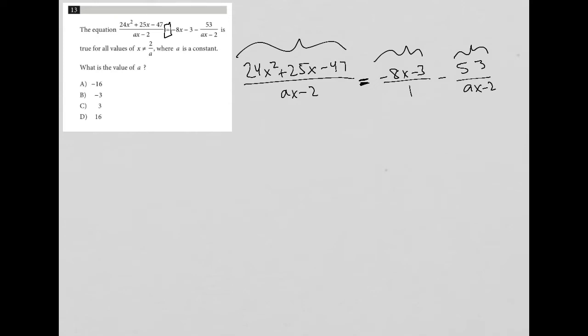I need to have a common denominator. So that means my negative 8x minus 3 over 1 needs to be multiplied by ax minus 2 over ax minus 2, and then I'd have my minus 53 over ax minus 2. ax minus 2 is the common denominator for the right-hand side or the lowest common denominator.